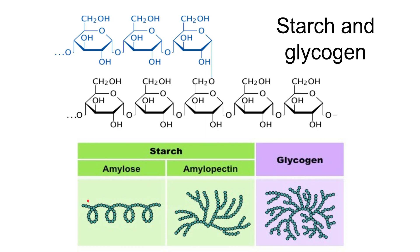The second reason is that the helical structure of amylose makes it a very compact molecule, so you can store a lot of glucose in a very small space. Additionally, amylopectin is branched, which means that if the plant needs to access glucose quickly, the branch points allow enzymes to work on the end of each branch, enabling rapid breakdown.